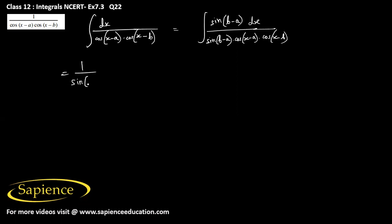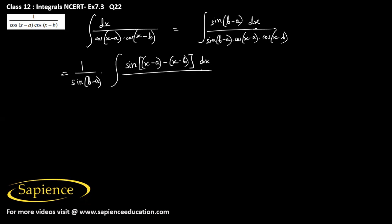So this will be 1 by sin(b minus a) into the integral. Now this sin(b minus a) we can write as cos[(x minus a) minus (x minus b)], divided by cos(x minus a) into cos(x minus b), dx.